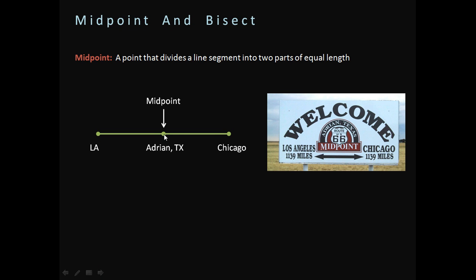Now, if Adrian, Texas is exactly the middle, you'll notice that it says 1,139 miles on this side, and 1,139 miles on that side. So that means that if Adrian, Texas is the midpoint, a midpoint means it's exactly in half. So that means whatever it is on this side, 1,139 miles, it's going to be on the other side.